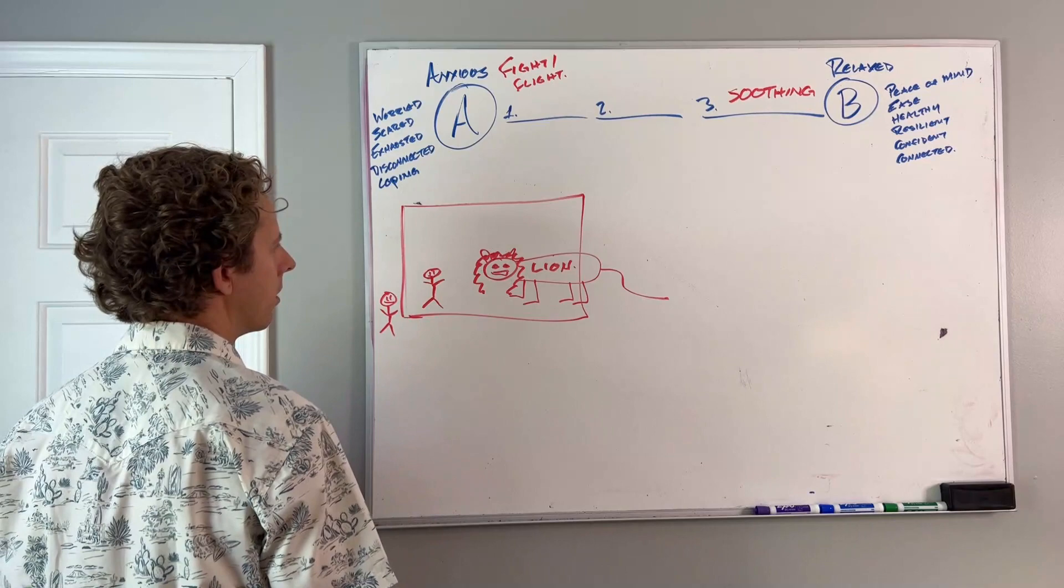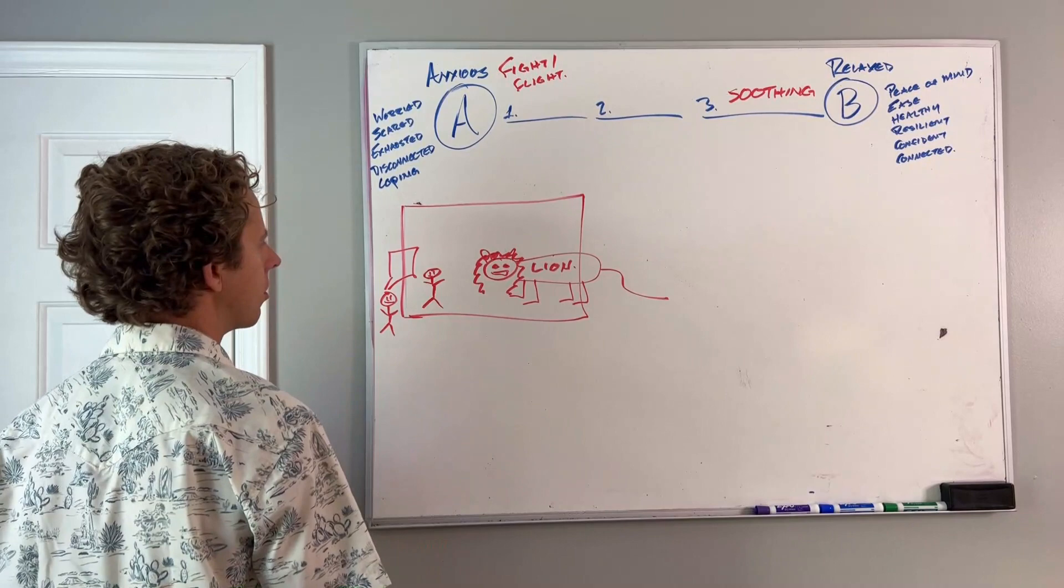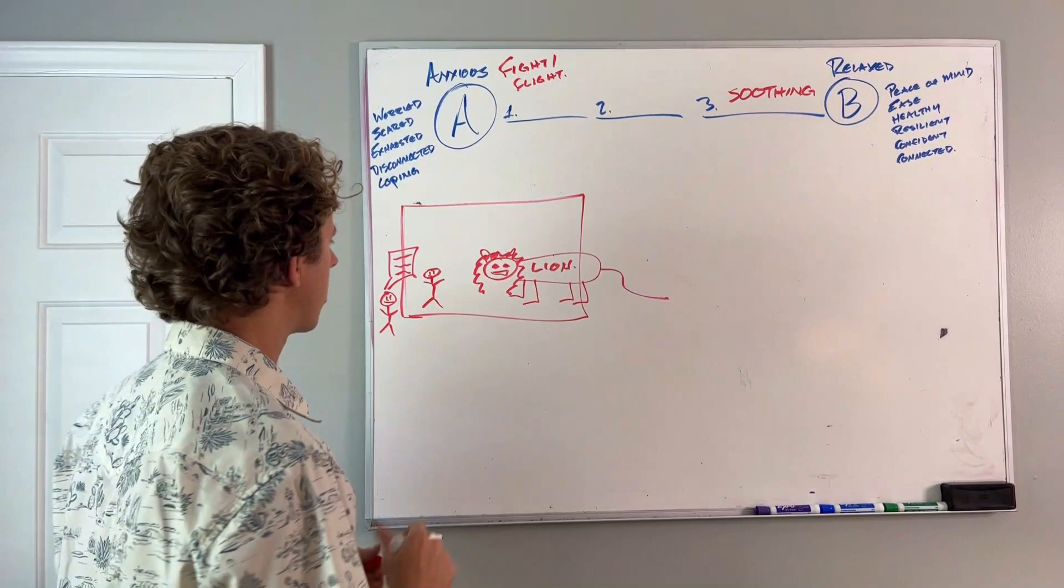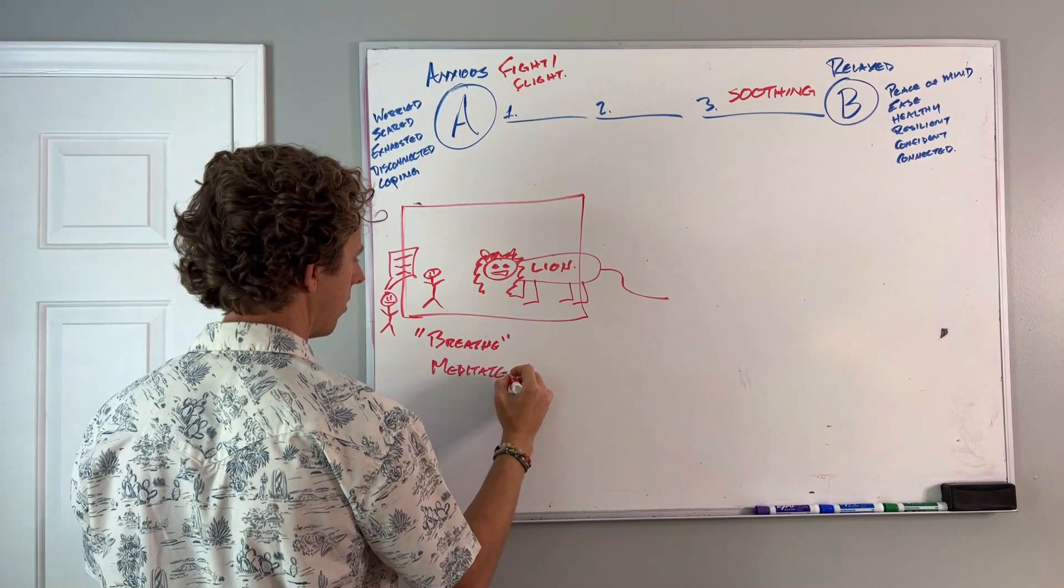The moment you see this lion, your body goes into panic mode. Fear overwhelms you. Is there anything in the world that I could shout to you through this wall that would make you feel safe and secure? If I shouted at you, 'just breathe, focus on your breath,' or 'you should try to meditate,' or 'don't think about the lion,' or 'just be positive?'